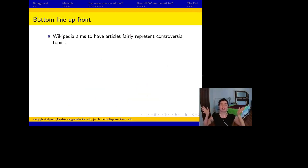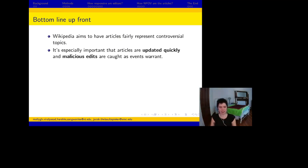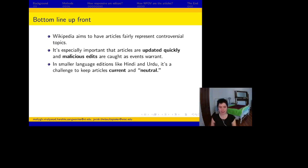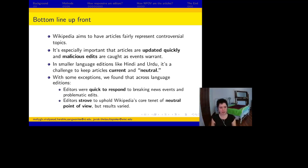Bottom line up front: Wikipedia aims to have articles fairly represent controversial topics. It's especially important that articles are updated quickly and malicious edits are caught as events warrant. In smaller language editions, like Hindi and Urdu language editions of Wikipedia, it's a challenge to keep articles both current and neutral. With some exceptions, we found that across language editions, editors were quick to respond to breaking news events and problematic edits, and they strove to uphold Wikipedia's core tenet of neutral point of view, but results varied.